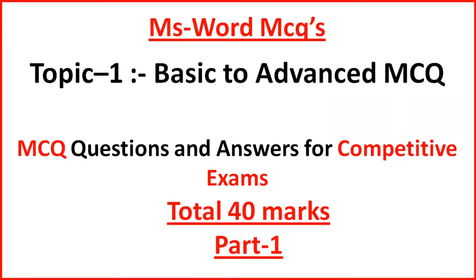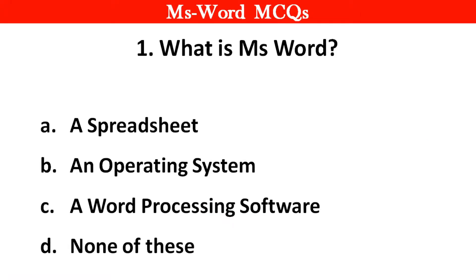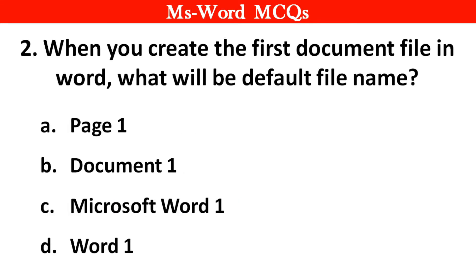Hi guys, today we are covering basics to advanced MS Word top 40 MCQs. Question 1: What is MS Word? Right answer is option C, a word processing software. Next question: When you create the first document's file in Word, what will be the default file name? Right answer is option B, Document 1.